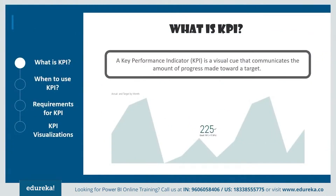A lot of you might wonder, what is KPI? A KPI, or key performance indicator, is a visual cue that communicates the amount of progress you've made towards a certain goal. It basically demonstrates how effectively a company is achieving key business objectives. Organizations use KPIs at multiple levels to evaluate their success on reaching targets, both internally and externally. High-level KPIs may focus on overall enterprise performance, while low-level KPIs may focus on internal things like employees in departments such as sales, marketing, et cetera.